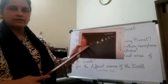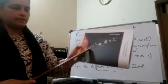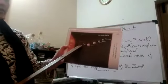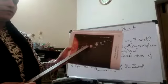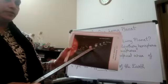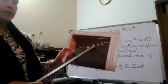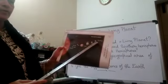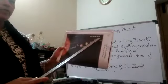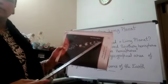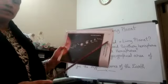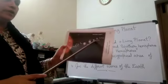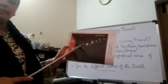The first one is Mercury, second one Venus, third one Earth, fourth Mars, Jupiter, Saturn, Uranus, Neptune. Pluto is removed from the solar system. Now we have only eight planets.